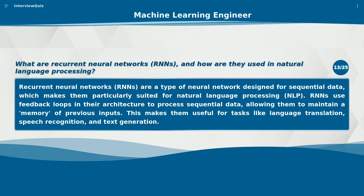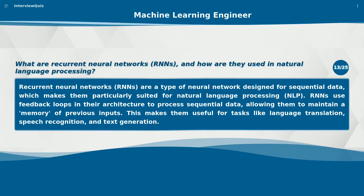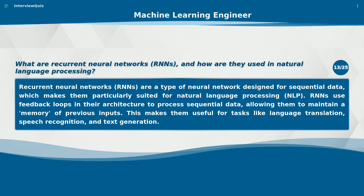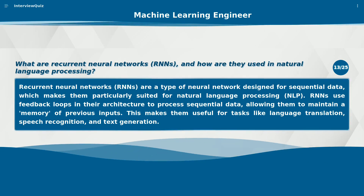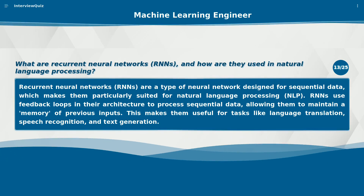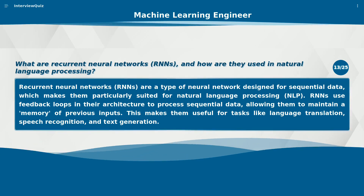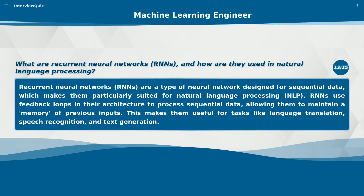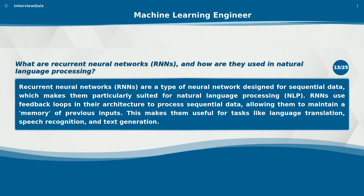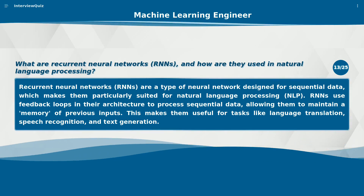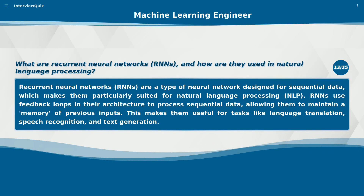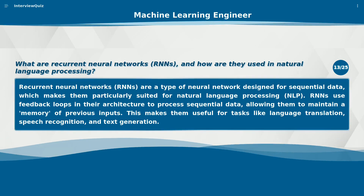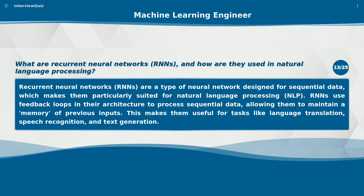What are recurrent neural networks (RNNs) and how are they used in natural language processing? RNNs are a type of neural network designed for sequential data, which makes them particularly suited for natural language processing (NLP). RNNs use feedback loops in their architecture to process sequential data, allowing them to maintain a memory of previous inputs. This makes them useful for tasks like language translation, speech recognition, and text generation.